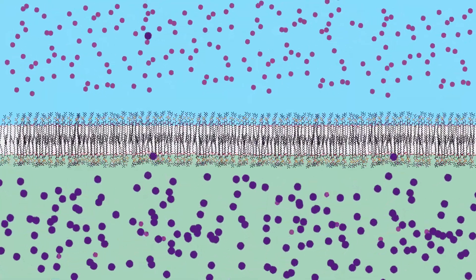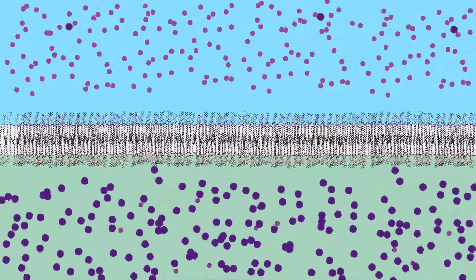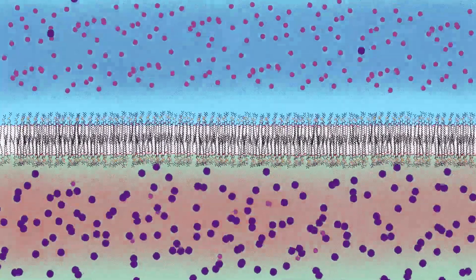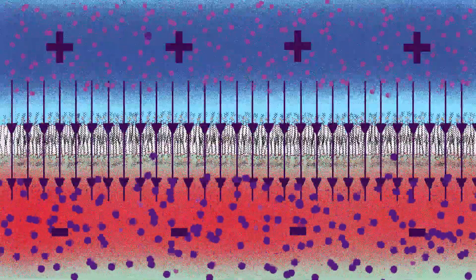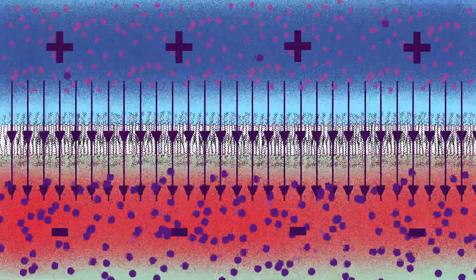When the membrane of a cell is polarized, the liquid that touches the inside is negative, and the liquid that touches the outside is positive. In a cell, the voltage inside a polarized membrane is less than minus 70 millivolts.